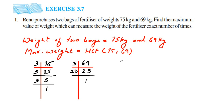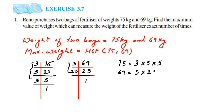Now we express the factorizations: 75 can be written as 3 × 5 × 5, and 69 can be written as 3 × 23. The Highest Common Factor is the factor present in both numbers. Here, 3 is present in both. There is no other common prime factor except 3. Therefore, the HCF is 3.